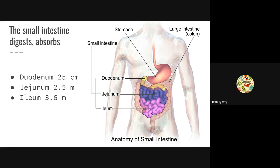Starting right up here where the stomach meets the small intestine, that first section is the duodenum. It's the shortest section, just about 25 centimeters, and this is where most of the digestion is going to occur.